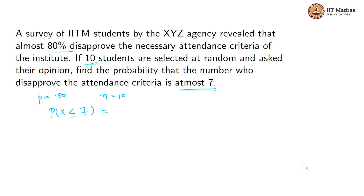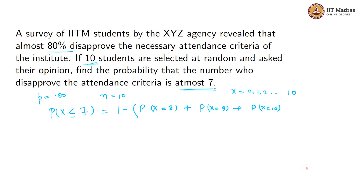Since you have 10 students, your x can take values 0, 1, 2, 3 till 10. You have been asked for the probability of x less than or equal to 7. You can write this in another way: 1 minus probability of x equals 8, plus probability of x equals 9, plus probability of x equals 10.